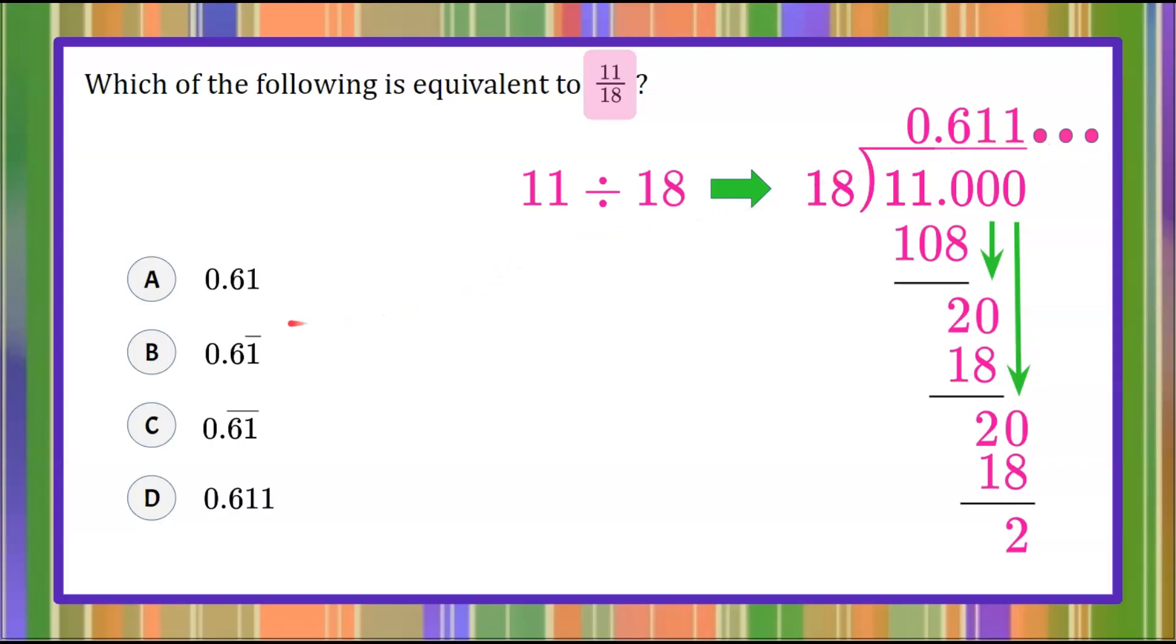So when we look at our answer choices, we can see that choice A and choice D are what we call terminating decimals. They stop. They end. There's no repeating symbol. So we know that answers A and D are not our answer choice because our decimal extends infinitely. It's a repeating decimal.